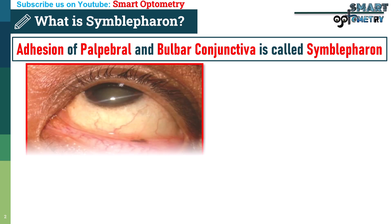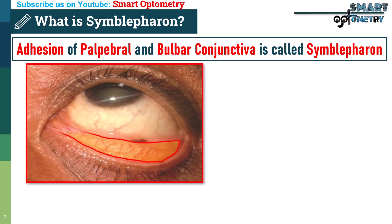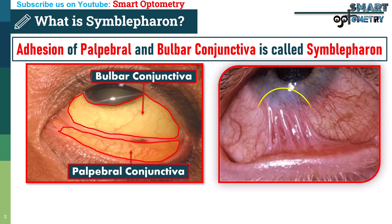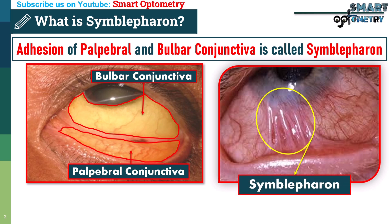In this figure, this portion is palpebral conjunctiva and this portion is bulbar conjunctiva. When these two portions adhere or attach with each other, then it's called Symbolpheron.